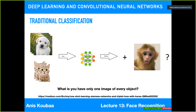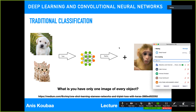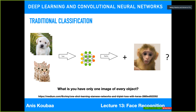At GITEX in Dubai, I registered online by posting my personal photo on the registration portal. When I arrived on-site, I stood in front of a camera and the system processed my image, identified me, and automatically printed my registration pass — just from one image. This is an excellent achievement: being able to identify a person among thousands of others in a database from just one image.